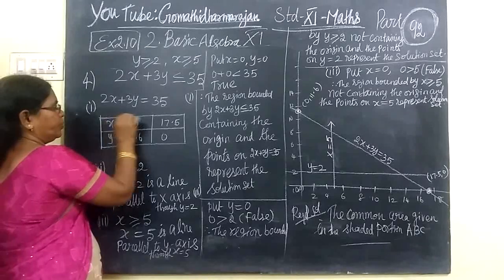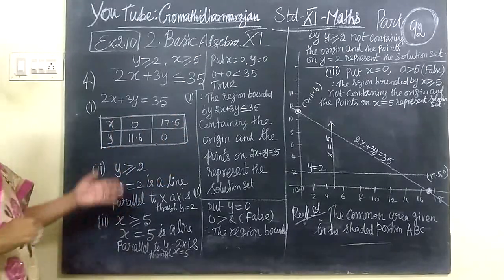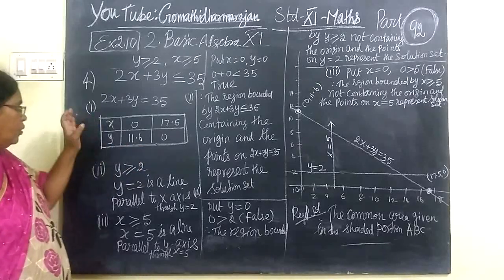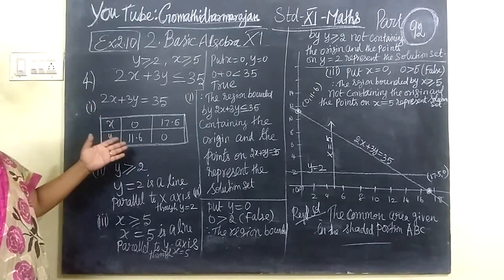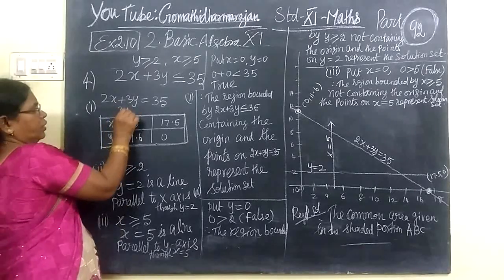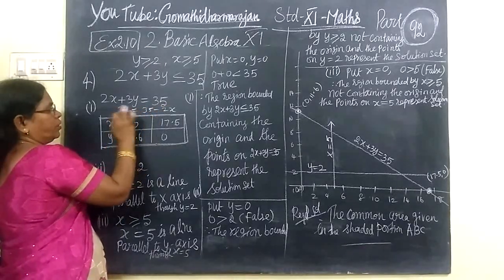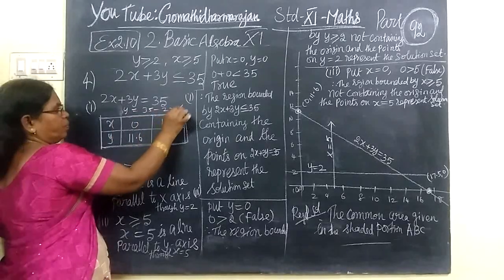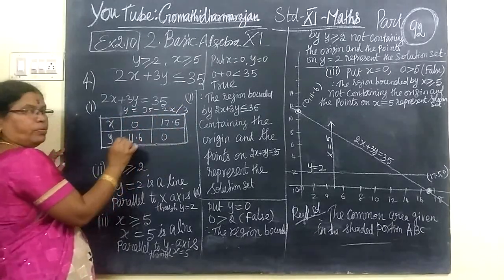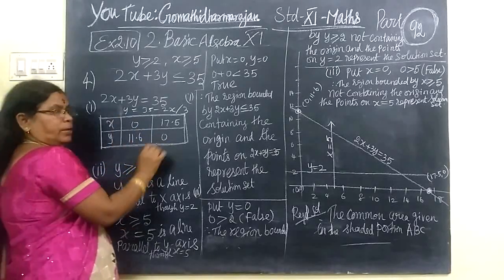We have the table of the column. Let's say 3Y equals 35 minus 2X. Put Y equal to 0 to get the X value, then put X equal to 0 to get the Y value.